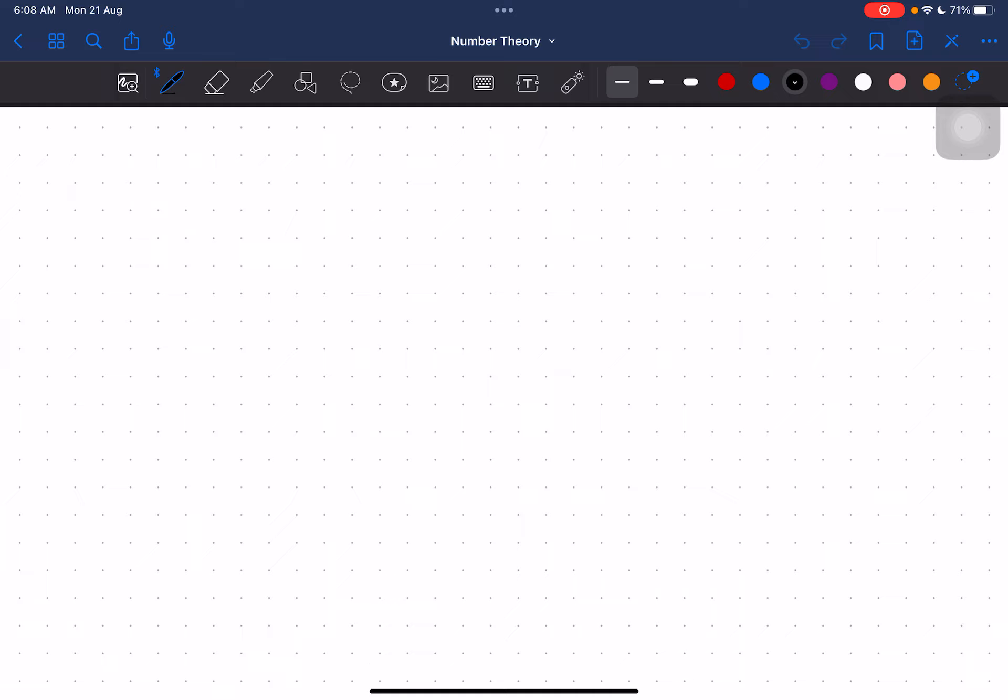The problem states that suppose p is a prime number. Then if I consider this number 3p² + 2p + 1, is it true that this is not a perfect square?